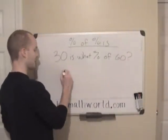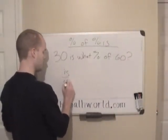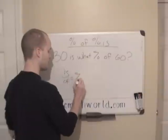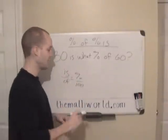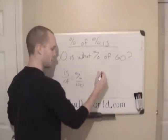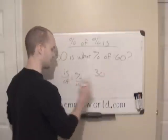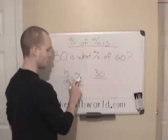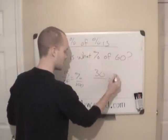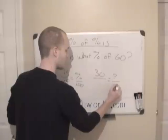So again we're going to write it out: is over of equals percent over 100. And then we have to write down what we already have. So 30 is, so we're given is. What percent, so we don't know the percent, so question mark over 100.